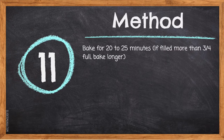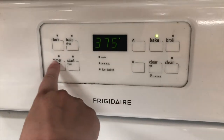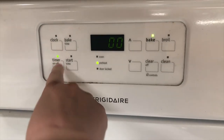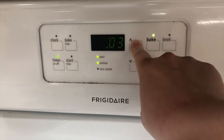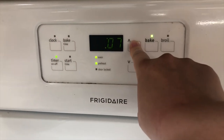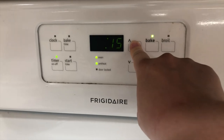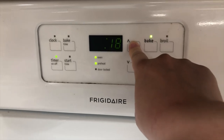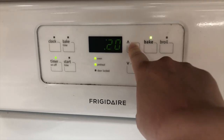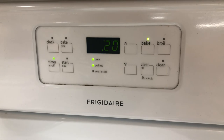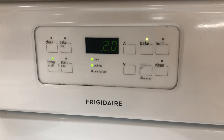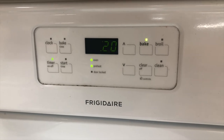Step eleven: bake for 20 to 25 minutes. If filled more than three-fourths full, bake longer. To set the timer on the oven, click the timer on/off button, then use the up and down arrows to set the time. Once you let go of the on/off arrows, your clock will begin ticking down in seconds.